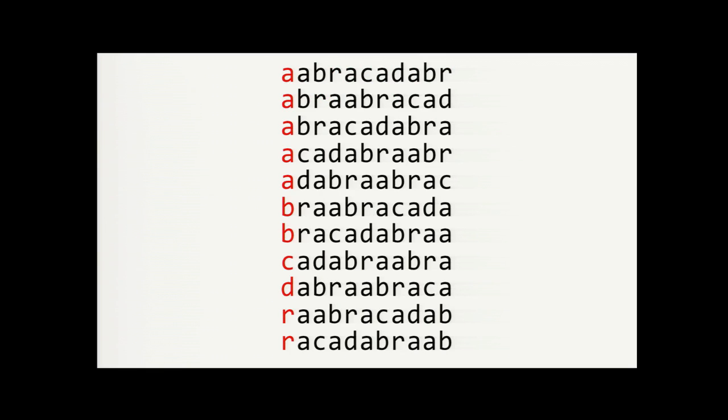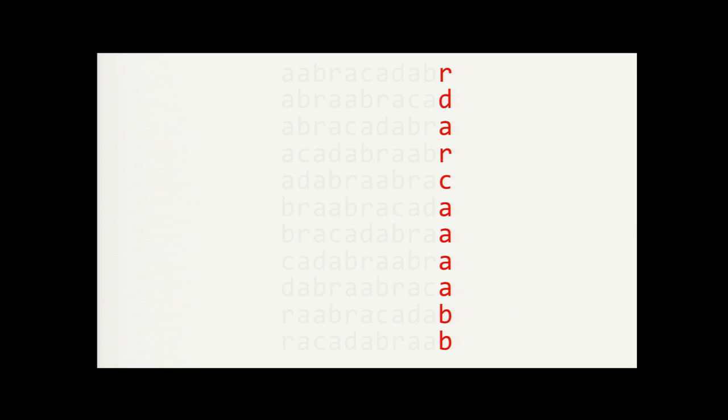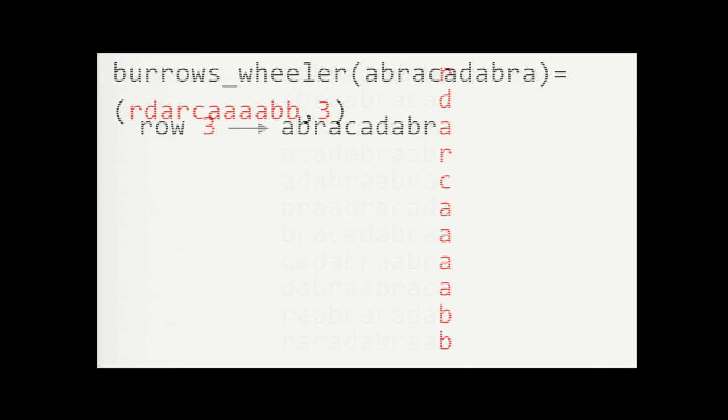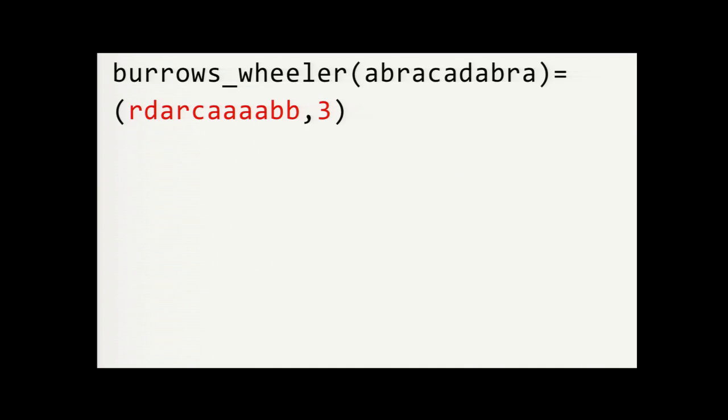We can see that the first column naturally has the most repetition due to the sorting. And the last column is especially interesting. So it turns out that the repetition in this column is proportional to the amount of compressible redundancy in the data. We keep this last column as the output of the transform and just discard all of the others. But we also do need to remember the row number of the original input. That would be row three for this example. So the Burrows-Wheeler transform for abracadabra gives us R-D-A-R-C-A-A-A-A-B-B and row three.